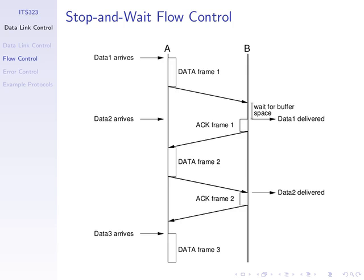We've introduced stop-and-wait, the flow control protocol. The basic mechanism is that the source sends a data frame. The destination, when it receives that data frame, puts the data inside a buffer. Because we have limited buffer space, if there's enough buffer space to receive another data frame, the destination responds with an acknowledgement, an ACK frame. The source cannot send more data until it receives an ACK for the previous data frame, so we have one data frame at a time.